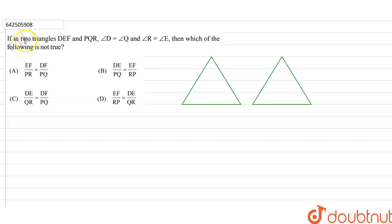Hi students, our question is: if in two triangles DEF and PQR, angle D is equal to angle Q, angle R is equal to angle E, then which of the following is not true?